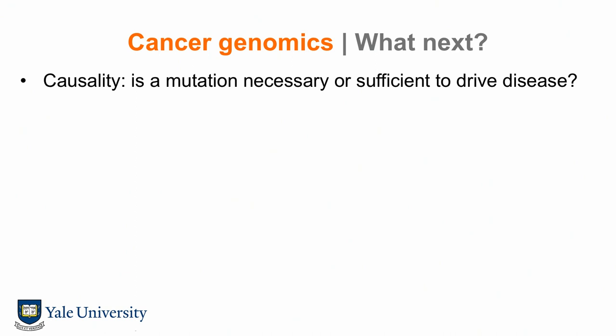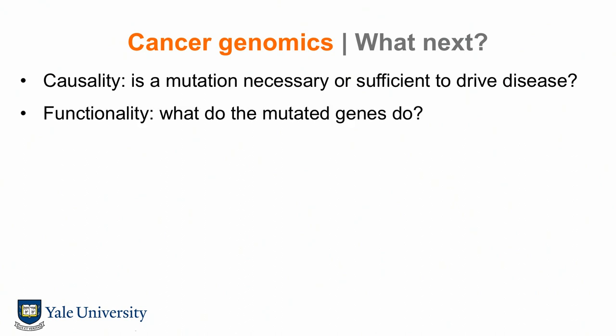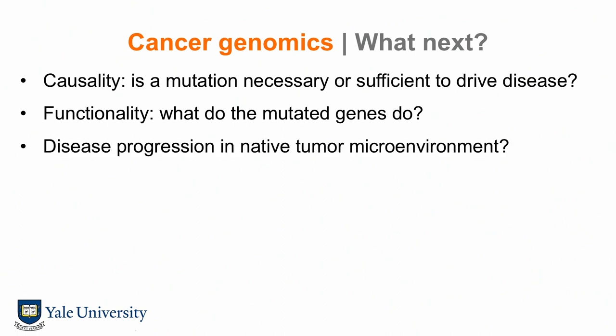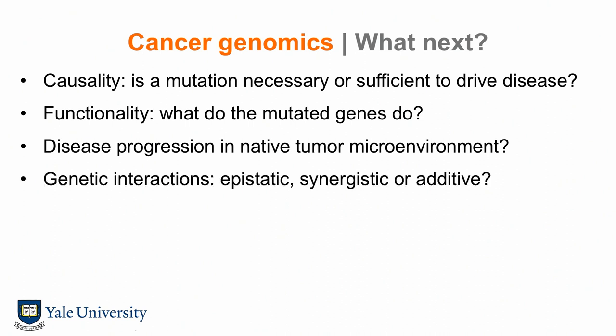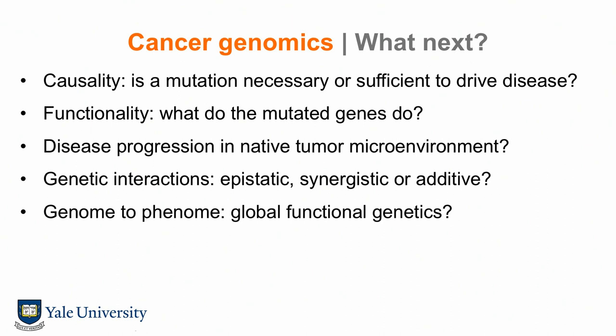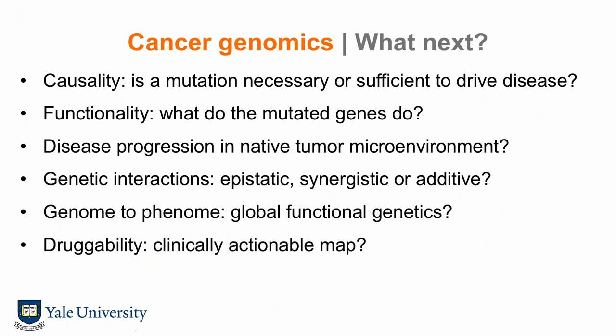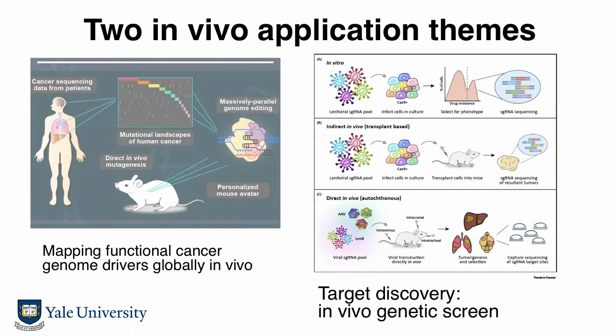So what do we do next? How do we understand if a mutation is necessary or sufficient to drive tumorigenesis? And once we know what these mutations do, do they progress in the native tumor environment — not just transforming the cells, but also turning the healthy cell in a specific organ, like the lung, brain, or liver? And do these genes interact epistatically, synergistically, or additively? How about we map the entire thing at one shot to have a global view of the cancer genome in a functional manner, to provide guidance for clinical action?